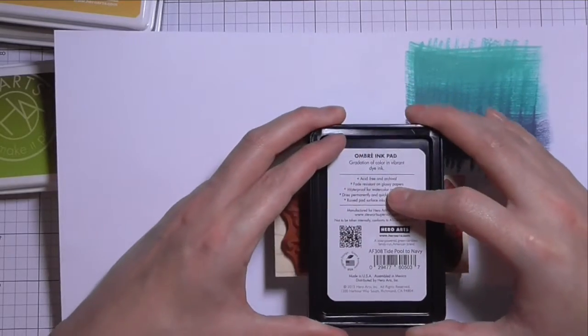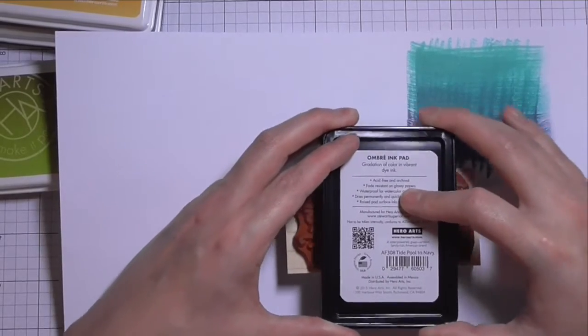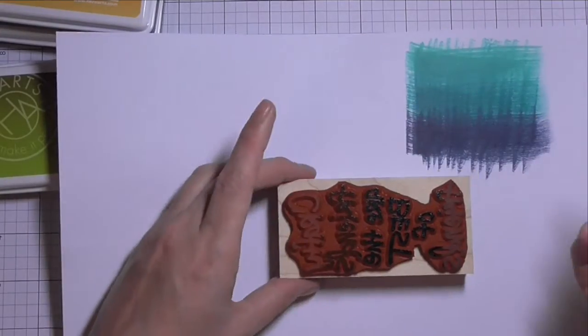And then I'm going to take the ink pad and just kind of move it backwards and forwards a little bit. So it's kind of like a little cha-cha-cha either side to make those colours blend.